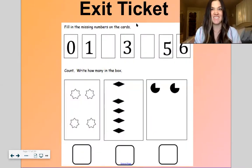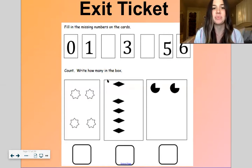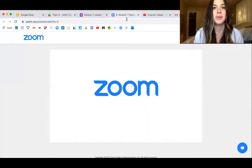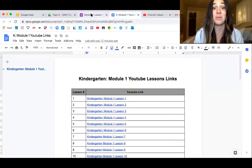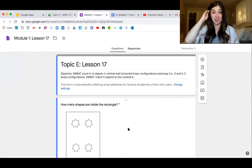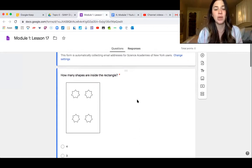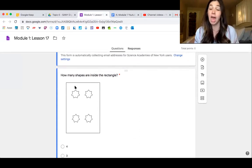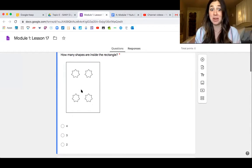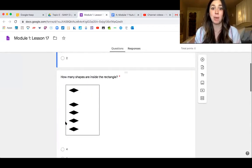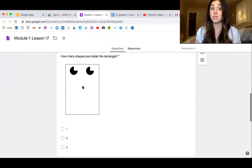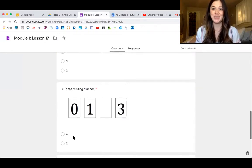All right. Let me show you your exit ticket for the day now, okay? And if you want to keep working with your whatever you have to count with, that would be fun to do this too. Okay. So look at this rectangle. How many shapes are inside the rectangle? And count. How many shapes are inside this one? Count. How many shapes inside this one? Count and choose.